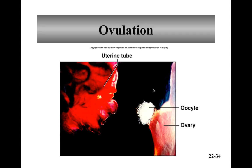The dominant antral follicle gets released about every 28 days, and this is ovulation. Ovulation is when the secondary oocyte gets released from the ovary along with all that follicular fluid. It's not released directly into the uterine tube, but it's released in the area and the uterine tube can accept it.